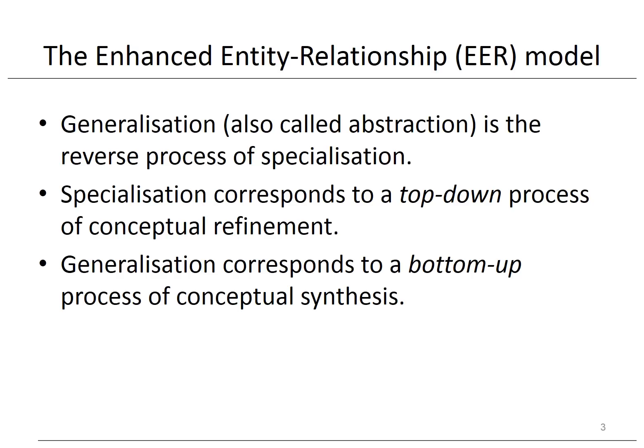Generalization, also called abstraction, is the reverse process of specialization. Specialization corresponds to a top-down process of conceptual refinement. As an example, the person entity type can be specialized or refined into the subclasses student and professor. Vice versa, generalization corresponds to a bottom-up process of conceptual synthesis. As an example, the student and professor subclasses can be generalized into the person superclass.